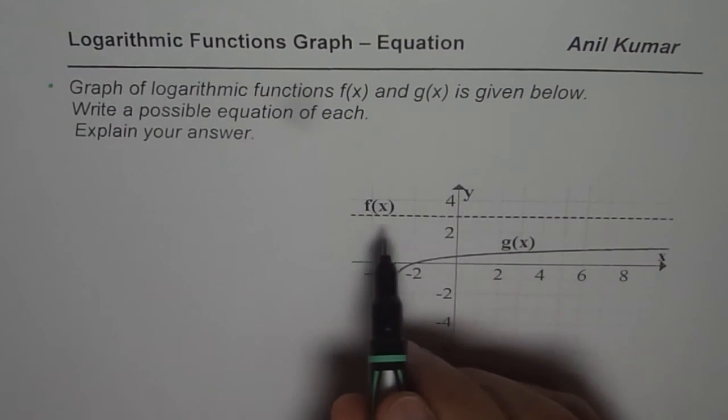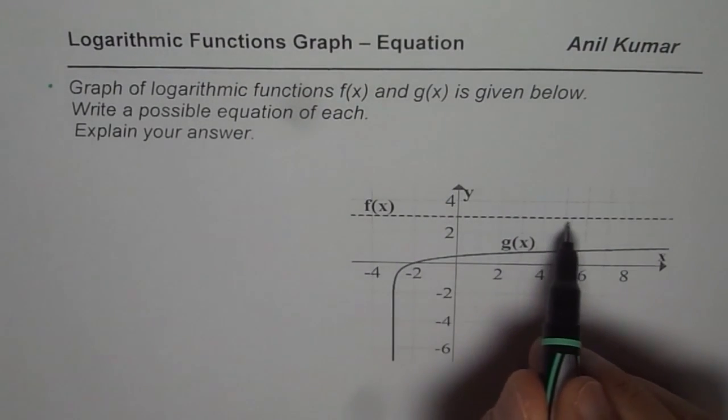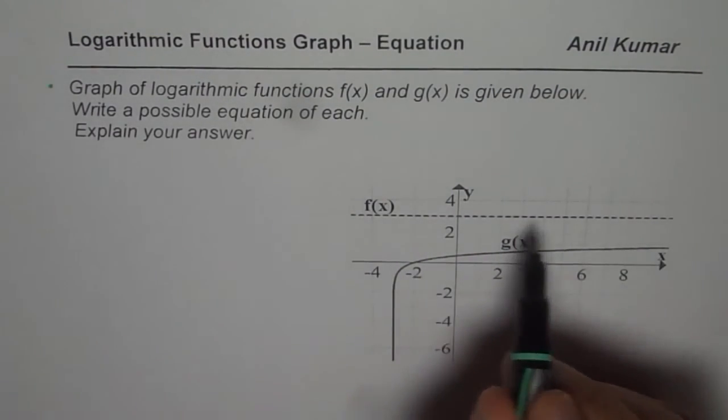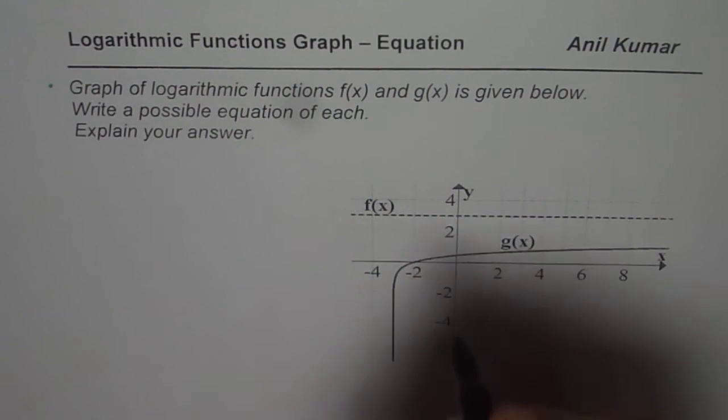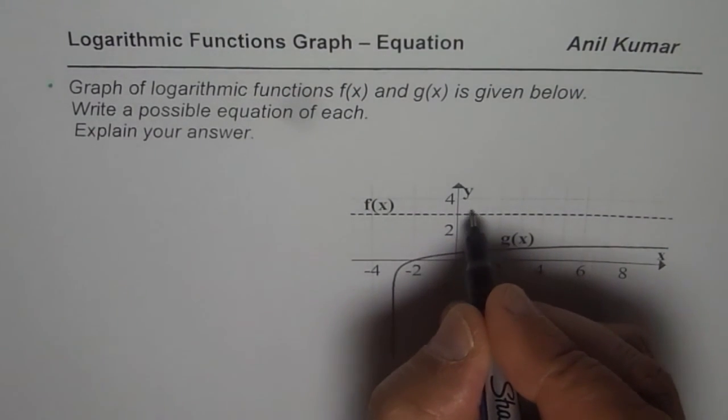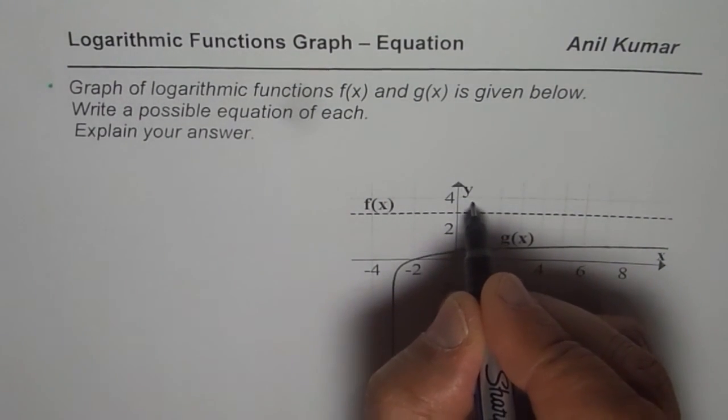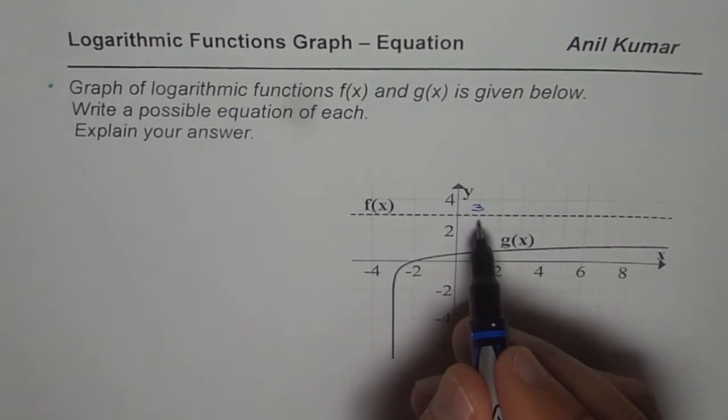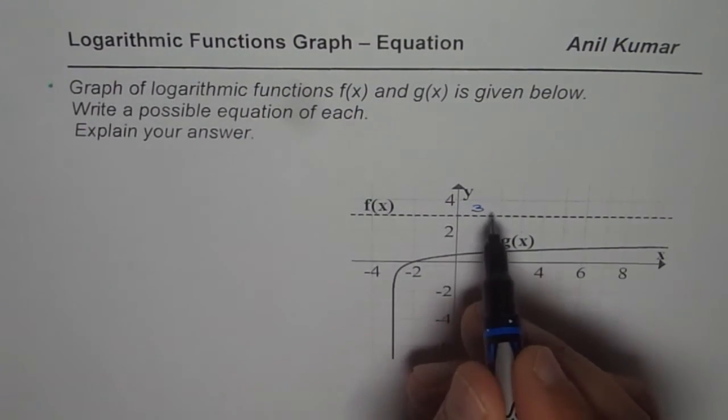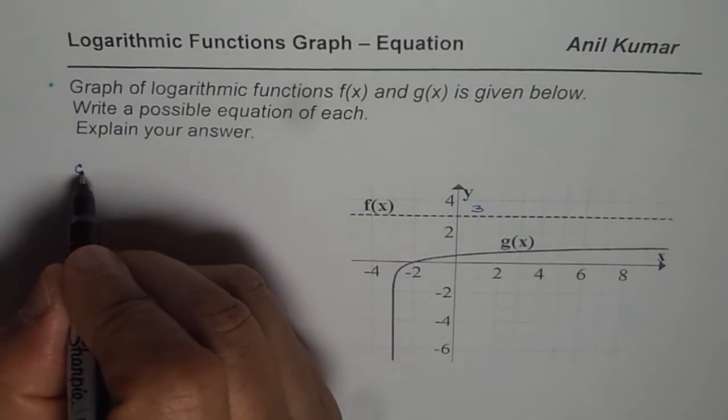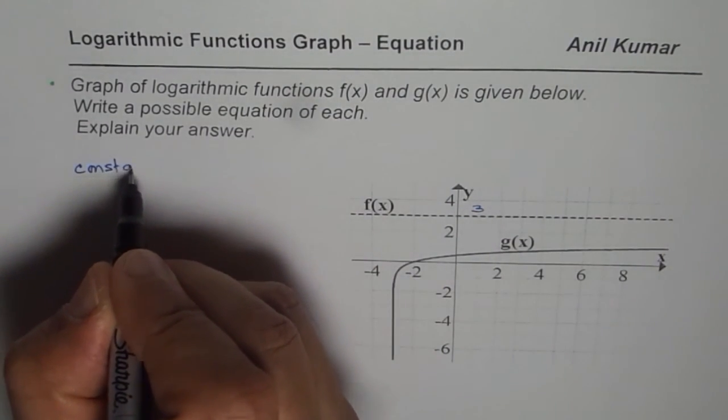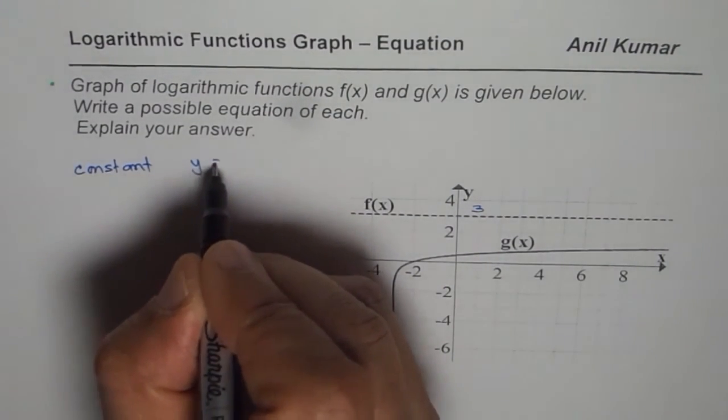Now f of x is kind of a constant. Do you see that? And there is no restriction. Can you have a logarithmic function which may be like this? Now let us see what this value is. This value equals 3, right? So we need a logarithmic function whose value is 3 for all real numbers. It means we are looking for a constant. It is kind of a constant y equals 3.